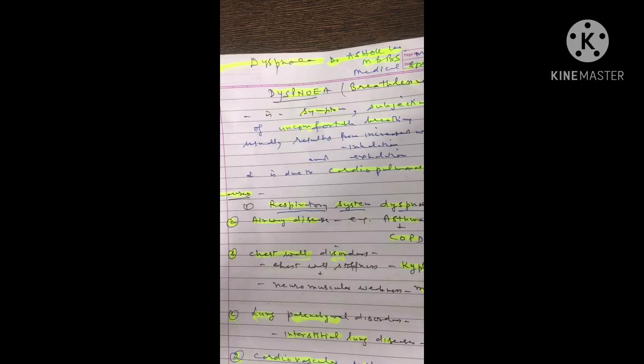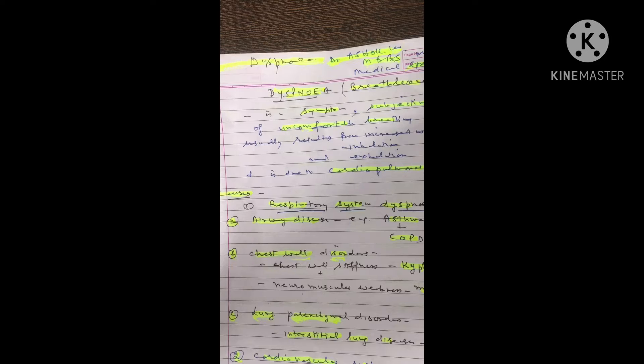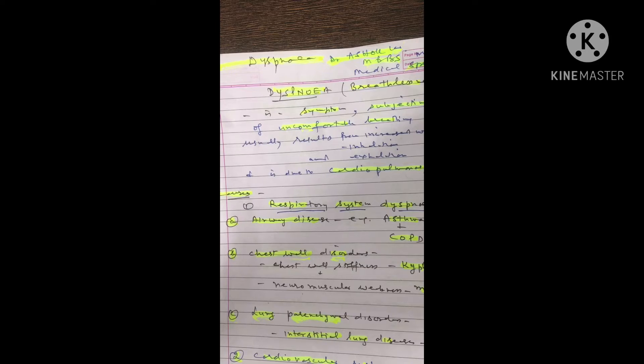The third is lung parenchyma disorders, that is interstitial lung diseases. For example, SLE, systemic lupus erythematosus, and ankylosing spondylitis.